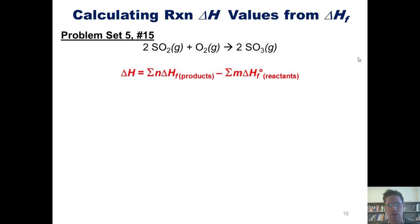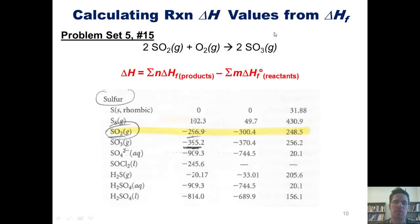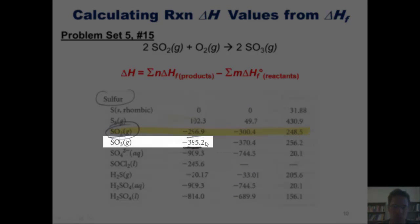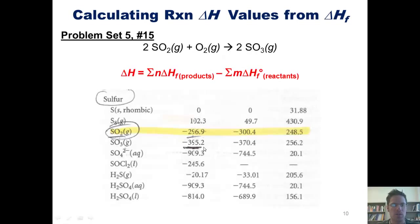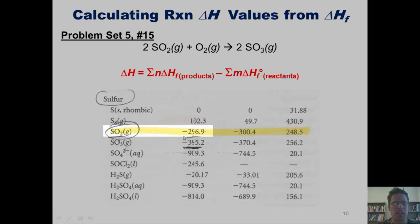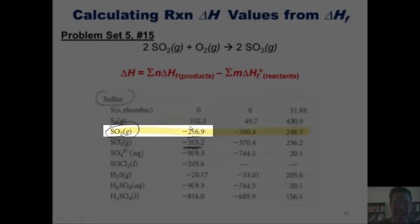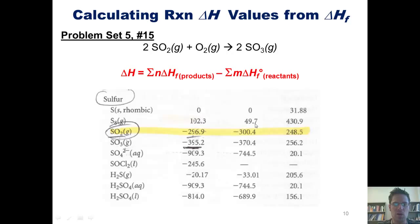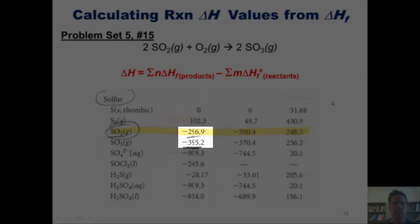As I examine this equation, I'll notice that SO3 gas, my product, has a delta H of formation of negative 395.2 kJ per mole from the appendix. SO2, one of my reactants, has a delta H of formation of negative 296.9 kJ per mole. O2 gas, because it's in its elemental state, has a delta H of formation of zero. Keep these two numbers in mind as we move on.